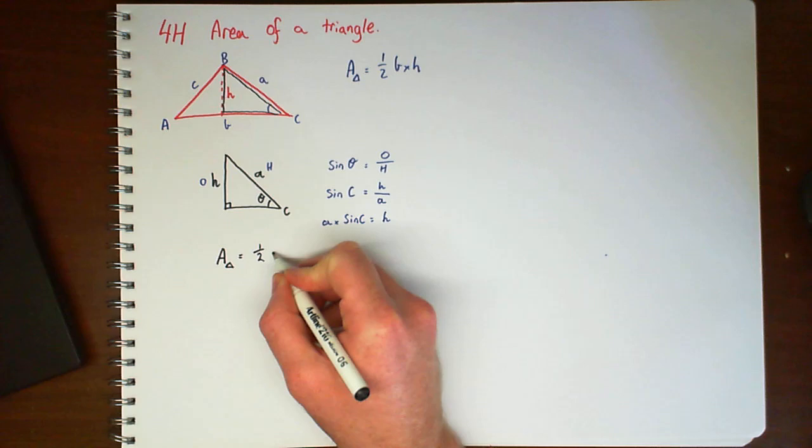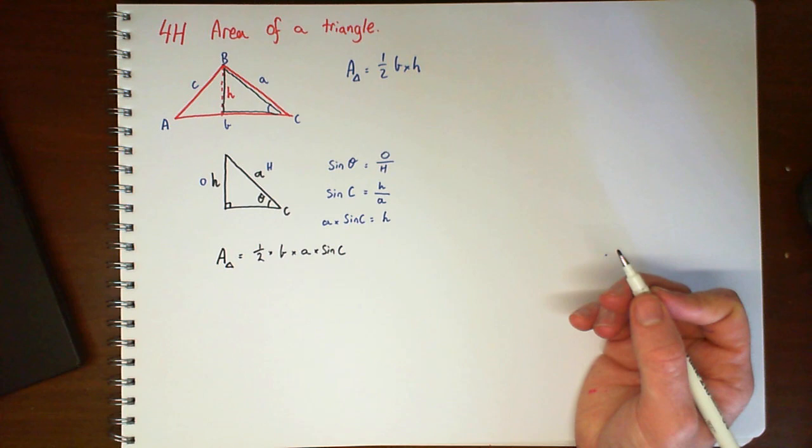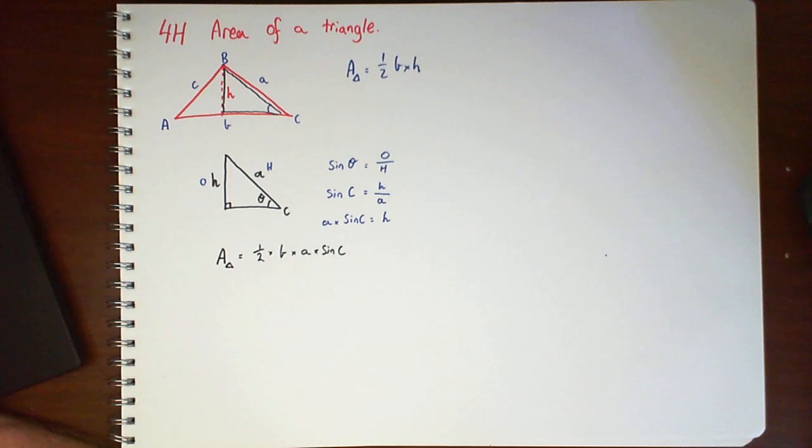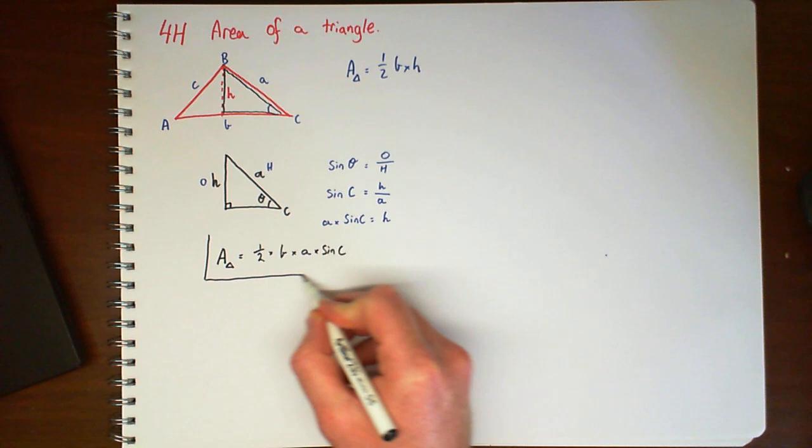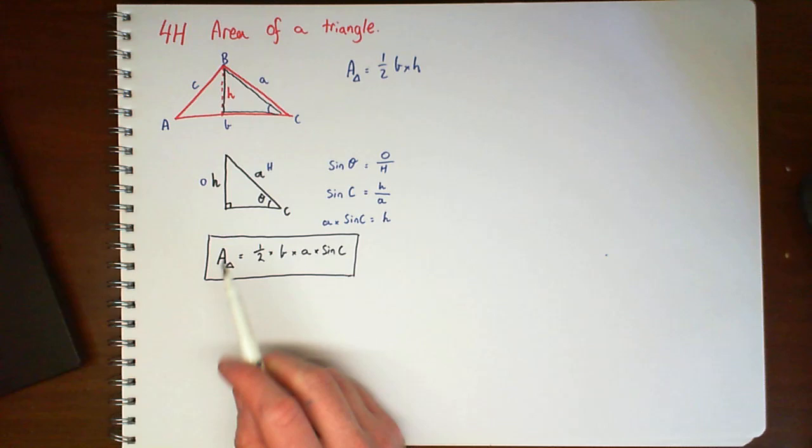would be half times the base times the height. And I know the height is A times sine of C. Which brings us to the area of our triangle. So I can use this formula to find out the area of pretty much any triangle that's given.